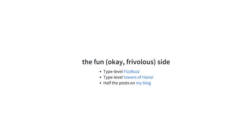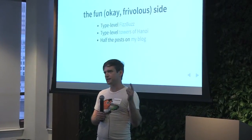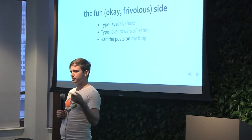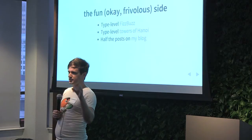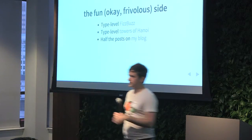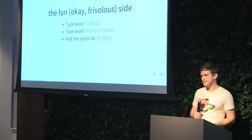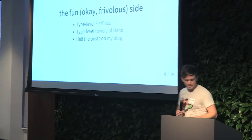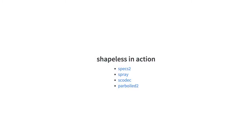I've been using Shapeless for a few years and there's a lot of really fun stuff you can do with it. There's a solution to the Towers of Hanoi problem at the type level, where when you compile your program, you specify the problem instance and the compiler actually solves it while compiling. It's frivolous, but it's cool that you can make the Scala compiler solve this kind of problem at compile time. But Shapeless isn't just a toy — there are lots of really important uses.